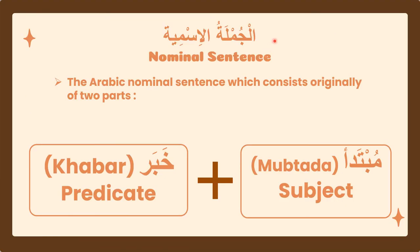Before we discuss this topic, let's recall the nominal sentences, الجملة الإسمية. We learned in the previous videos that there are two types of sentences in Arabic: nominal and verbal sentences. كَانَ وَأَخْوَاتُهَا can only be used in nominal sentences. So let's have a brief summary: what is جملة الإسمية — the nominal sentence? The Arabic nominal sentence consists originally of two parts: the first part is مُبْتَدَأ and the second part is خَبَر.